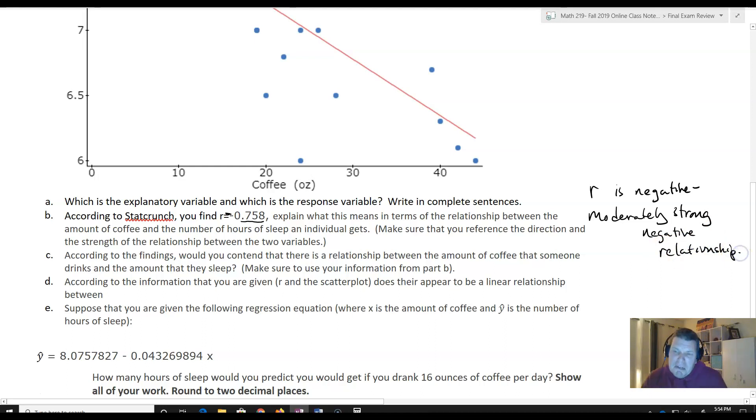So I got a pretty good relationship there, gives me some information. Now, according to the findings, would you contend that there's a relationship between the amount of coffee that someone drinks and the amount that they sleep? Well, my answer is yes. I do definitely believe that there is. And the reason why is because I got a moderately strong negative relationship. So as I drink more coffee, I'm going to sleep less. And the data is because R is equal to negative 0.758. And because that's the relationship that shows up in the scatterplot.